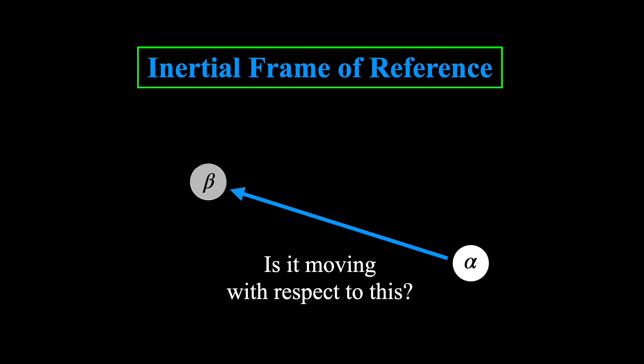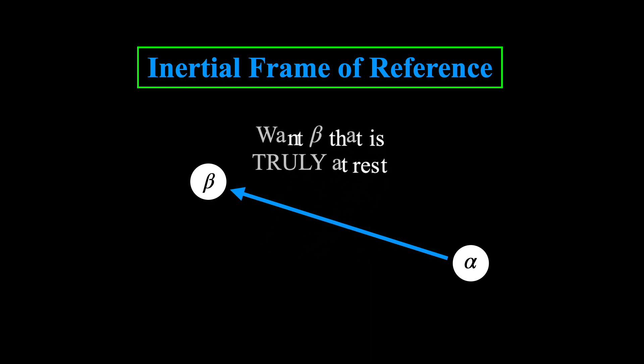In order to talk about the motion of an object alpha, we always need to have another object beta. This second object can then be used as a reference point to be able to say if alpha is at rest or moving with respect to it. And, if we want to use Newton's first law of motion and speak objectively about this type of motion, then it seems that we would need to find an object beta that is truly at rest, something that could provide a true rest frame.